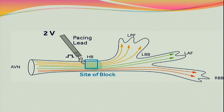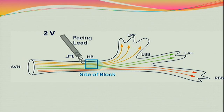For the procedure, we usually get groin access to place an EP His bundle catheter in the standard His bundle location, which gives us a fluoroscopic landmark. Then we create a pocket, take two separate punctures — one for the atrium and one for the ventricle — and use the specially designed sheath and lead to map the His bundle region.